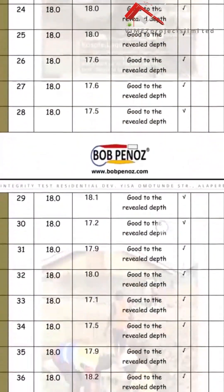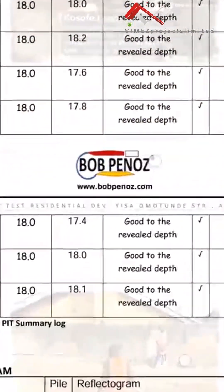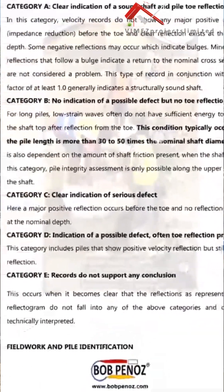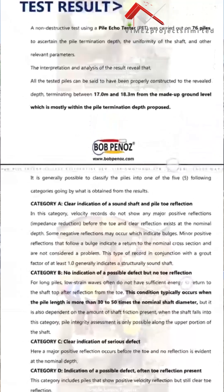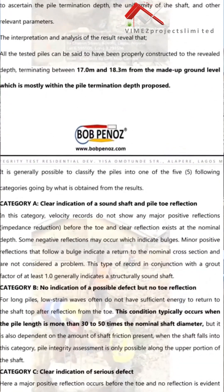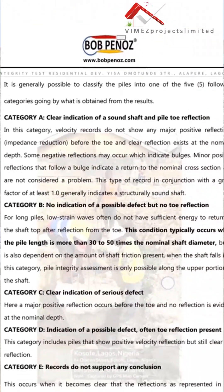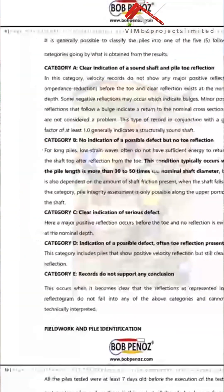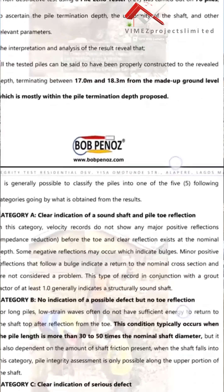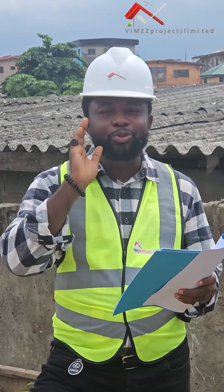I'm pleased to tell you that our results are very wonderful. We conducted the Pile Integrity Test on 76 pile points. Each of these points averages between 17.5 to 18 meters depth. The test results on each point are grouped under different categories — Category A through Category D. Category A shows a clear indication of sound shaft and pile toe reflection, while Category D shows an indication of possible defects.